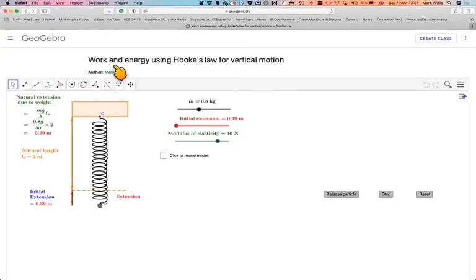In this video, we're going to look at work and energy using Hooke's Law for vertical motion. So what we've got here is a fixed point here, a spring, with a mass of, at the moment, 0.8. You can change the mass according to the slider.